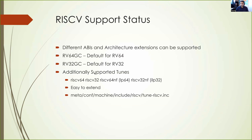Currently there are different ABIs and architecture extensions we support. The default is RV64GC for 64-bit and RV32GC for 32-bit — these are also the defaults for any Linux-based distribution. In addition we support a few additional tunes; right now we have no-float, meaning soft-float, in addition to the GC extension. The power is that you can easily extend it to any additional tune you'd like, ensuring you can build the whole system using those ABIs and tunes.